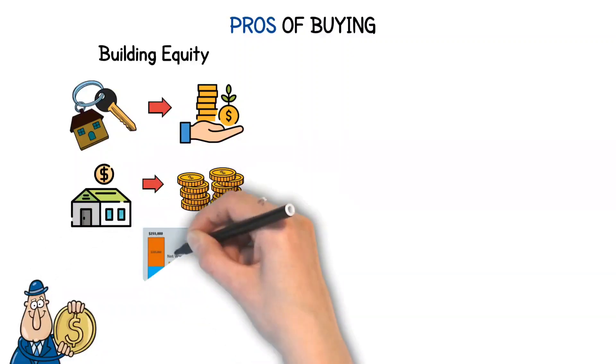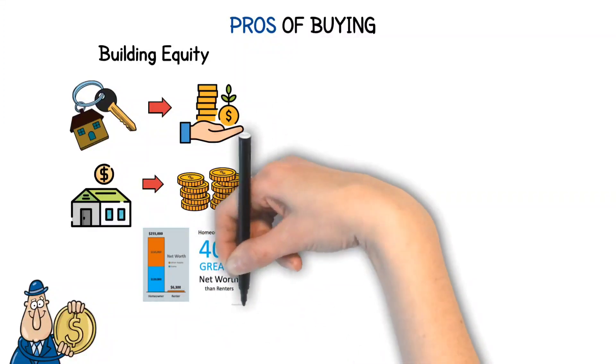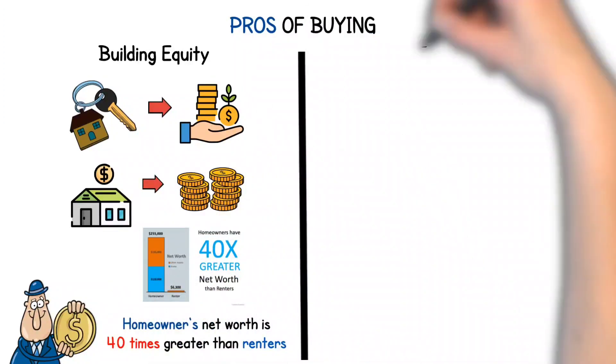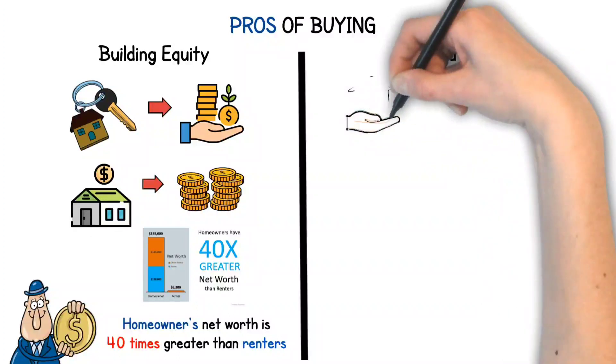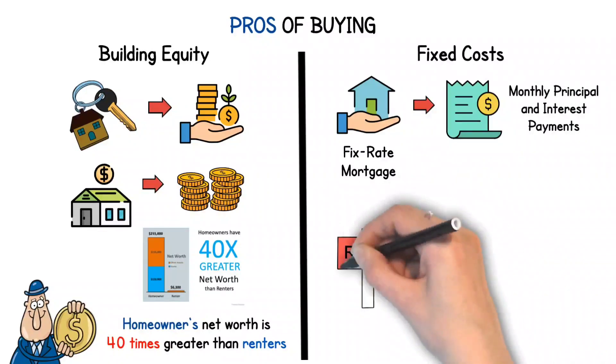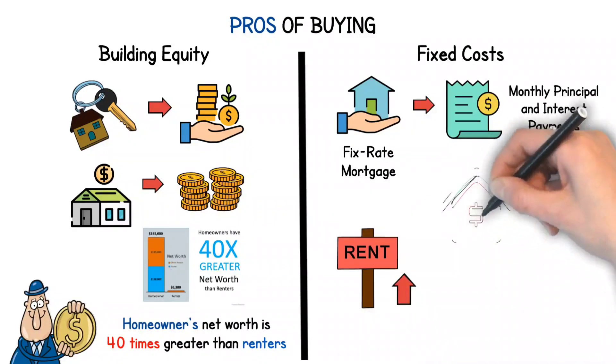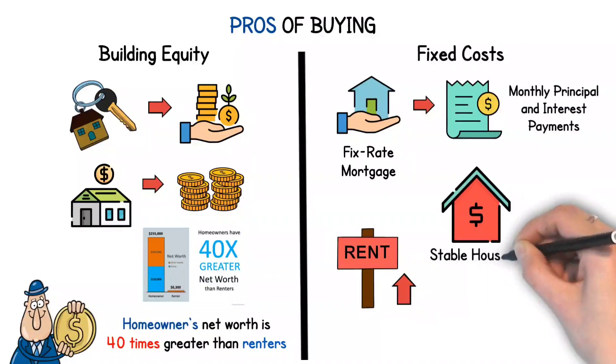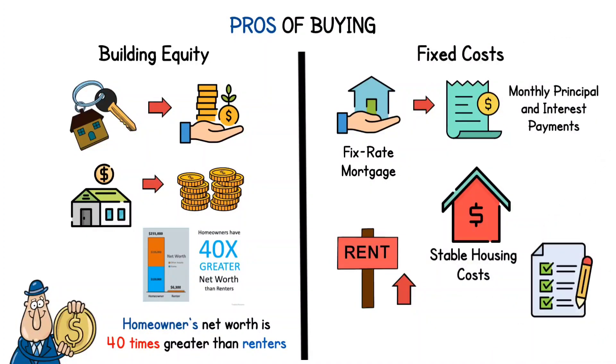According to recent data from the Federal Reserve, the average homeowner's net worth is over 40 times greater than that of renters. Fixed costs. With a fixed-rate mortgage, your monthly principal and interest payments remain the same for the life of the loan. This predictability is a significant advantage over renting, where landlords can increase rent each year. Stability in housing costs can help in better financial planning.